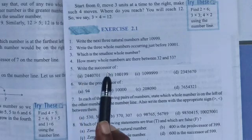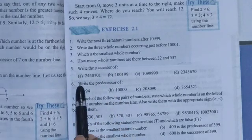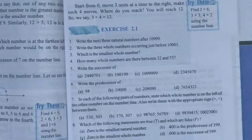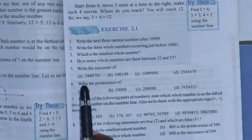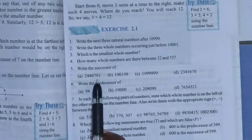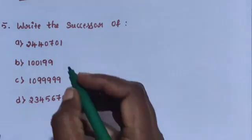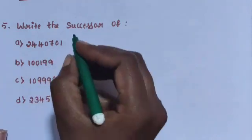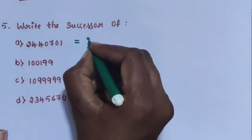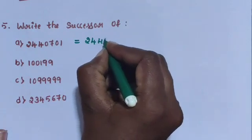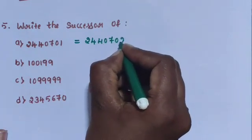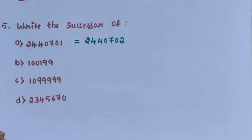Question number 5: Write the successor. Sub-question A: 24,40,701. The successor number is 24,40,702.